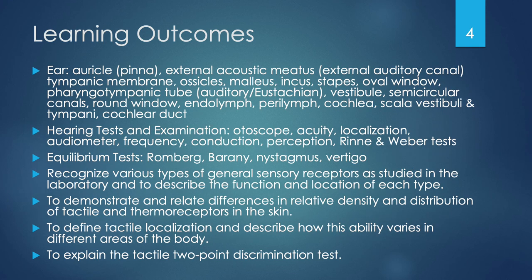Some of these objectives are going to be covered in the lab and not just the lecture, but this is for both the lecture and lab unit. It also includes being able to define the following terms about the ear: the auricle or pinna, the external acoustic meatus or external auditory canal, the tympanic membrane or eardrum, ossicles, the malleus, incus, and stapes, the oval window, the pharyngotympanic tube or auditory or eustachian tube, the vestibule, semicircular canals, the round window, endolymph, perilymph, the cochlea, and the scala vestibuli and tympani, and the cochlear duct.